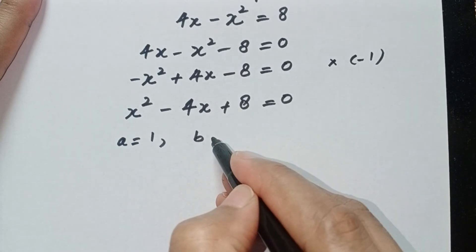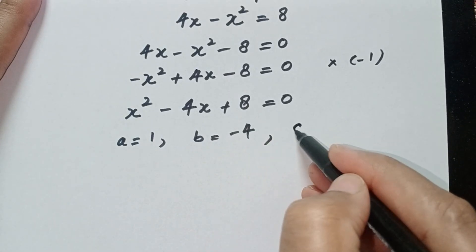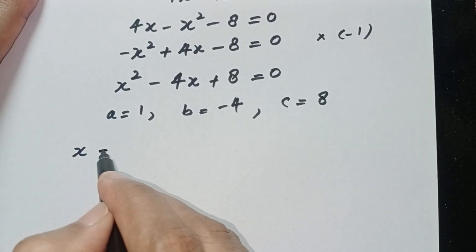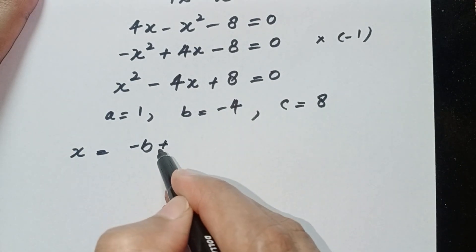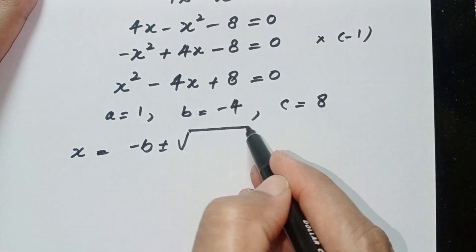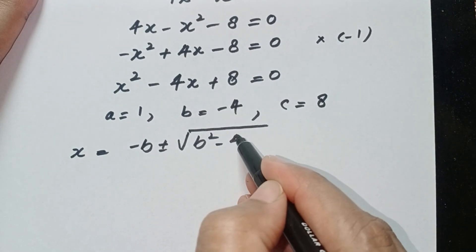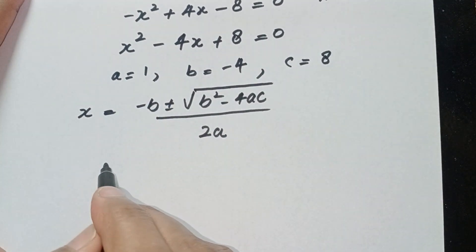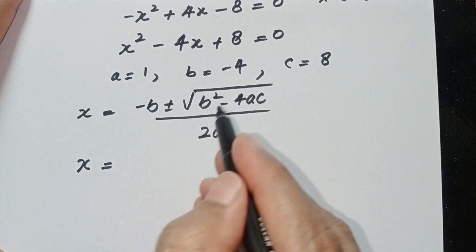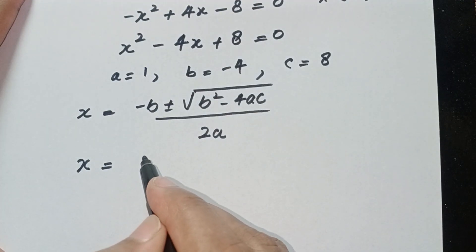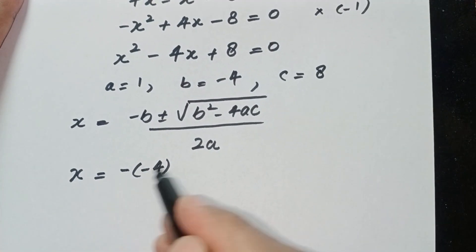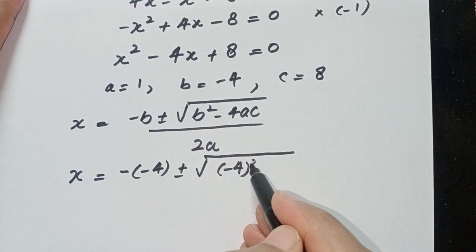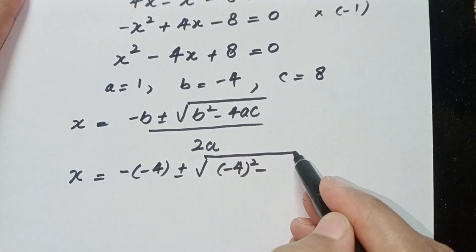Here a is equal to 1, b is equal to the coefficient of x which is minus 4, and c is equal to 8. We will use the quadratic formula: x equals minus b plus or minus square root of (b squared minus 4ac), over 2a. We now plug in the values of a, b, and c.